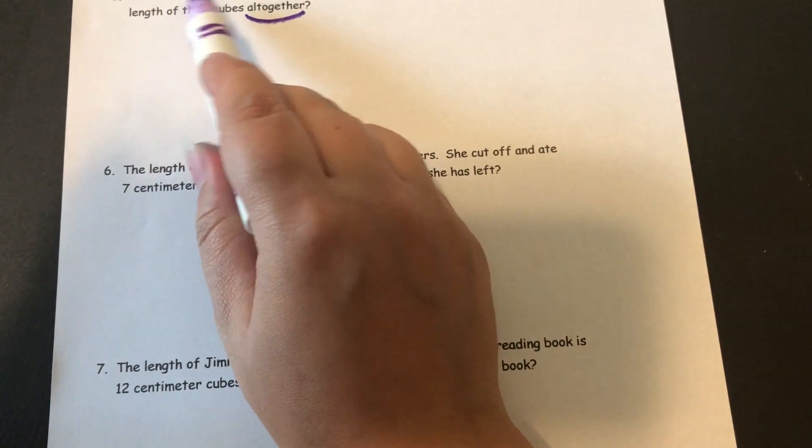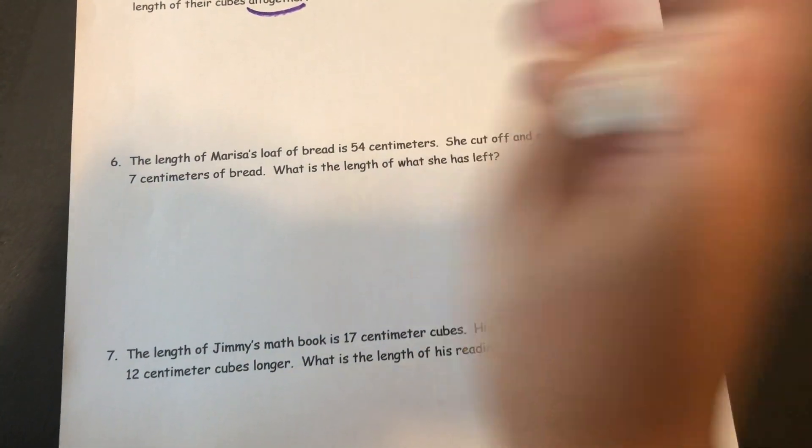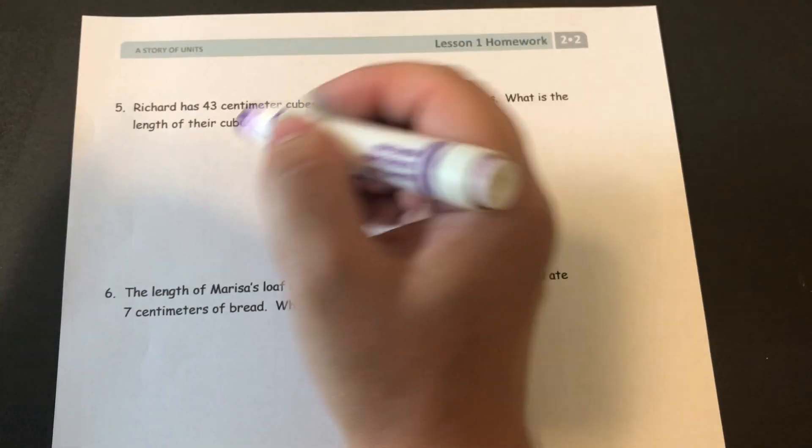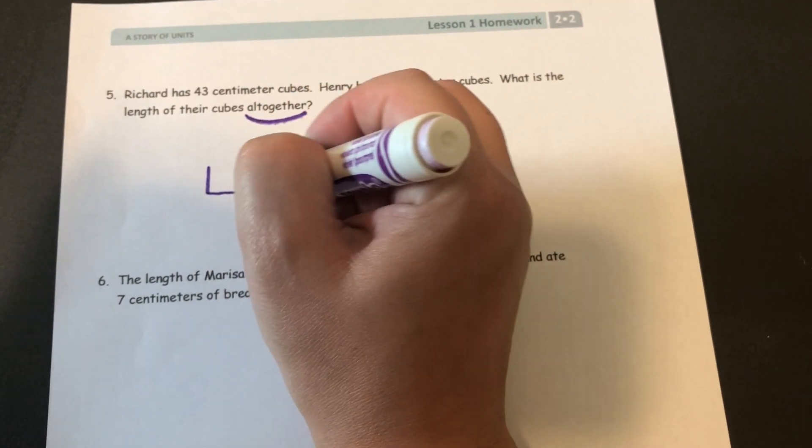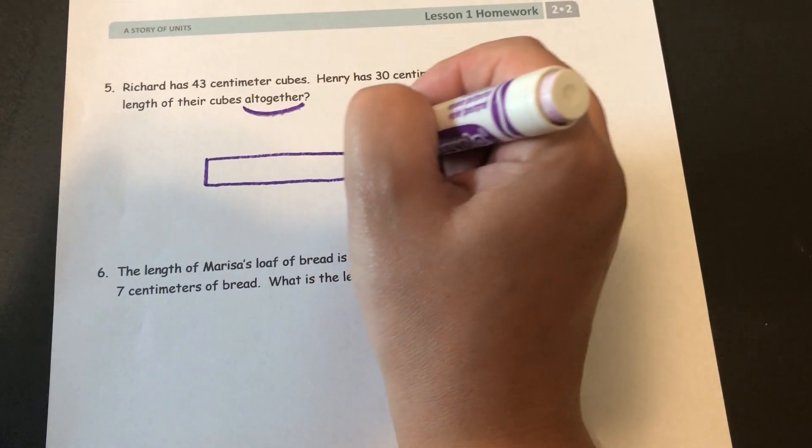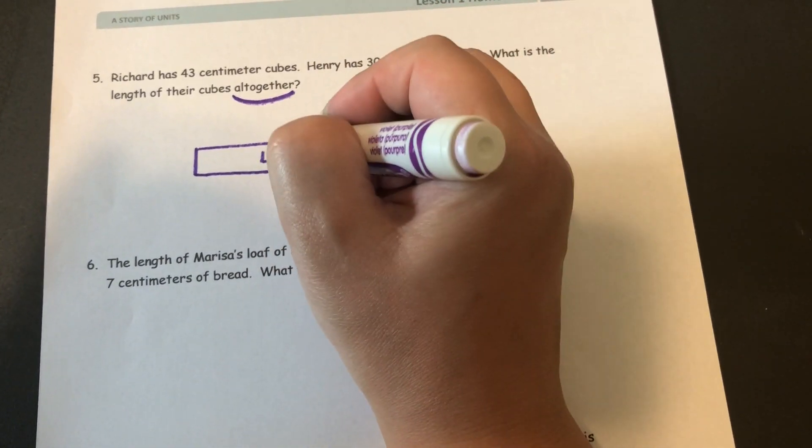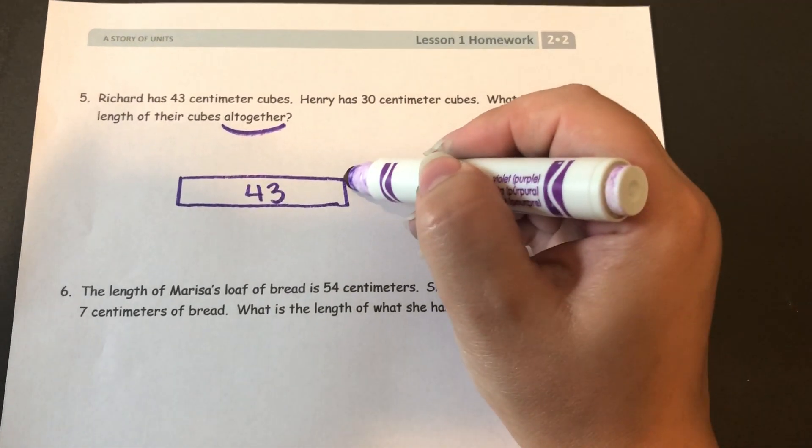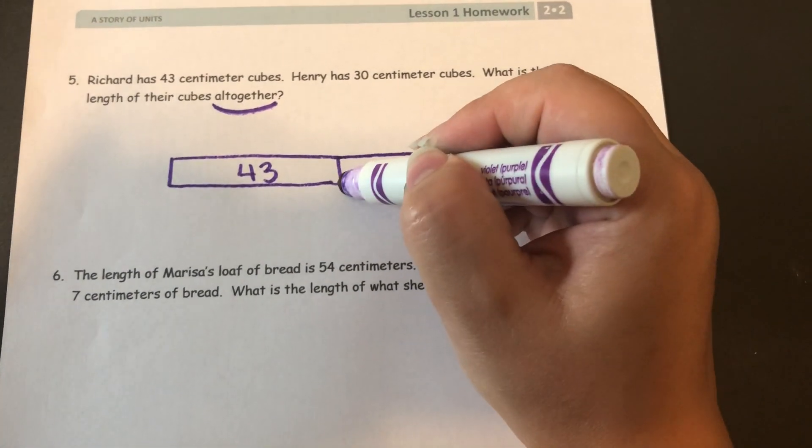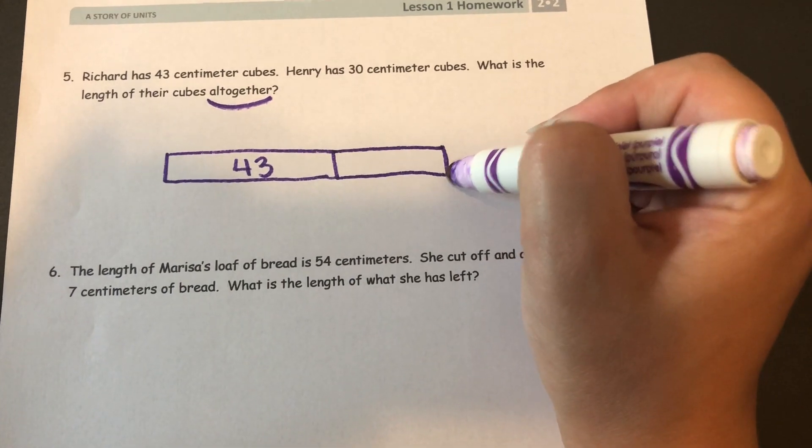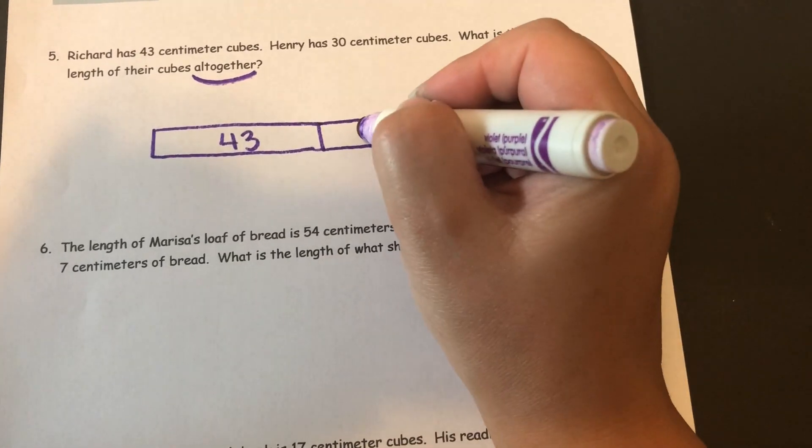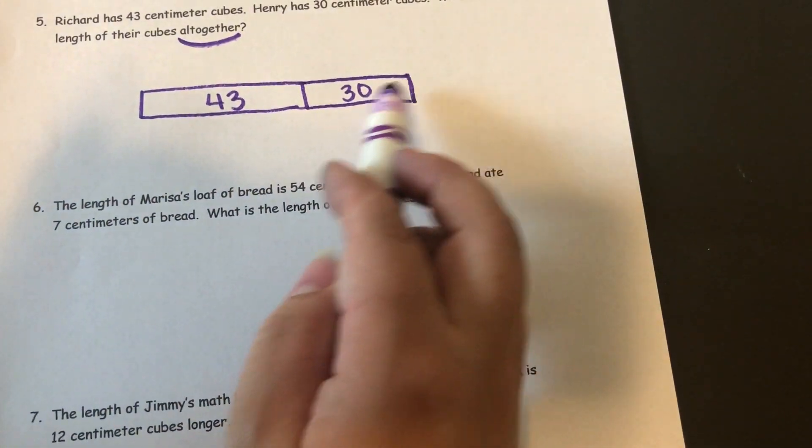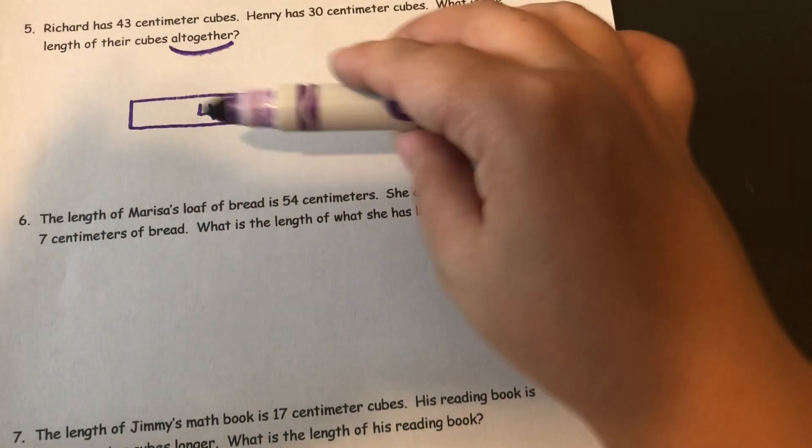So I want to put these numbers together. I know that Richard has 43. I'm using a tape diagram to model this one. And Henry has 30. And I put my tapes right next to each other because it wants to know the length of the cubes together. So I put them together.